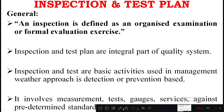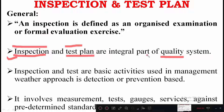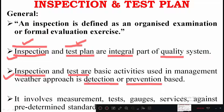Inspection and test plans are the integral part of the quality system. When you have adopted inspection as well as the test plan, only then can you achieve quality. Inspection and test are basic activities used in management with two approaches: detection and prevention. Detection means identifying exactly where a mistake has been made and correcting it before final finishing.